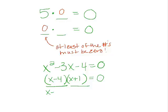So perhaps x minus 4 equals 0, which would mean that x equals 4. Maybe the x plus 1 equals 0. And if that's the case, then x would equal negative 1.